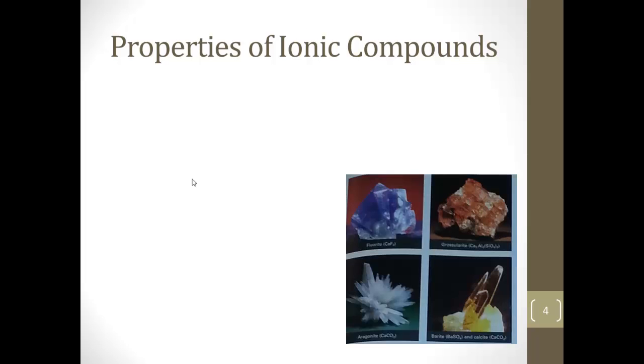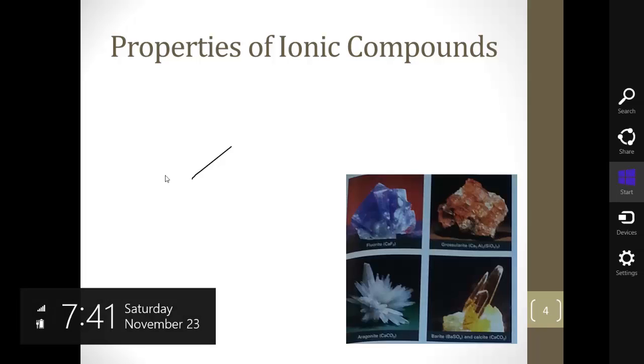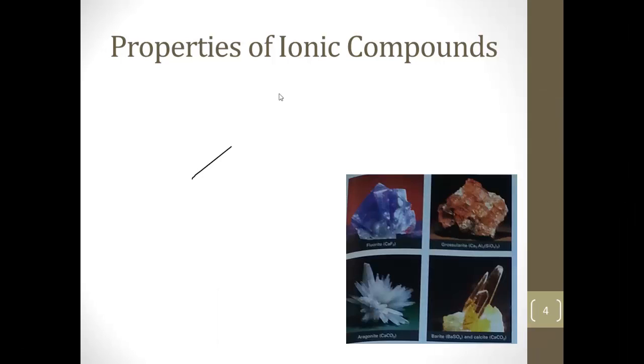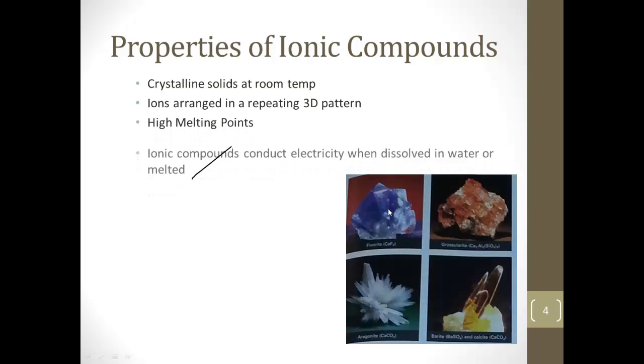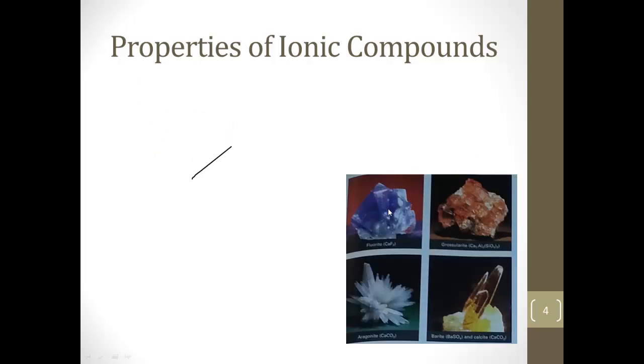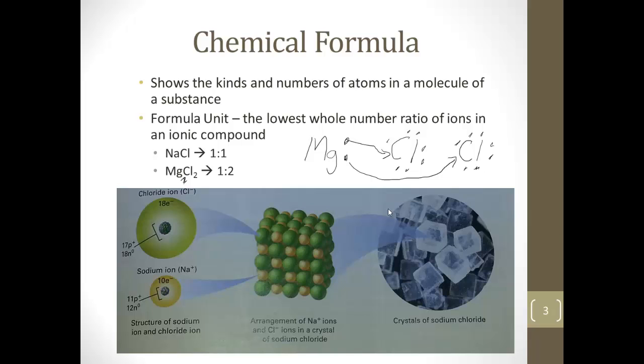All right, so what are some properties of ionic compounds? These are some things we have to kind of remember. Since they really like sticking to each other, they're going to form a solid at room temp, and they're called a crystalline solid. They look like crystals. And the ions are arranged in a repeating three-dimensional pattern, kind of like that picture on the previous page. It's like a nice 3D pattern of all these ions to make the molecule.